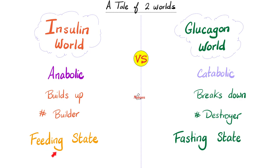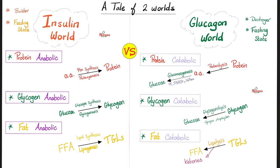Insulin is secreted in the feeding state so that you can build up and store stuff for a rainy day. Glucagon is a destroyer — you need it in the fasting state to break down big stuff into small stuff so you can burn it and get energy. Insulin: builder, anabolic, feeding state — protein anabolic, glycogen anabolic, and fat anabolic.